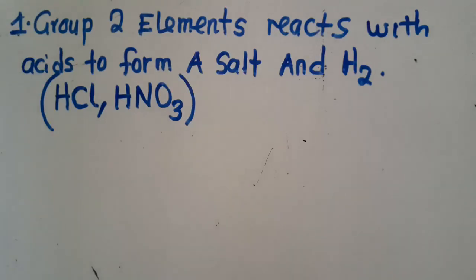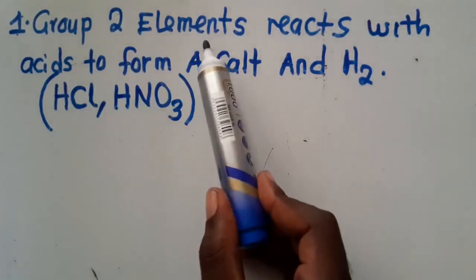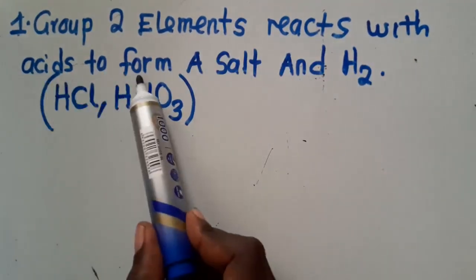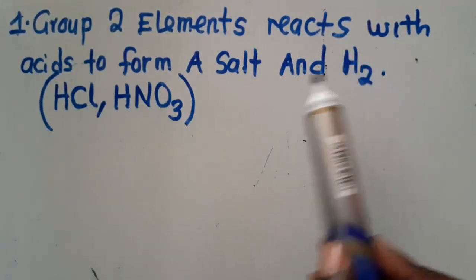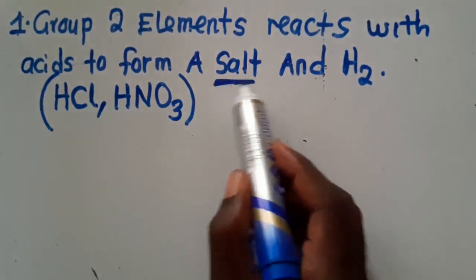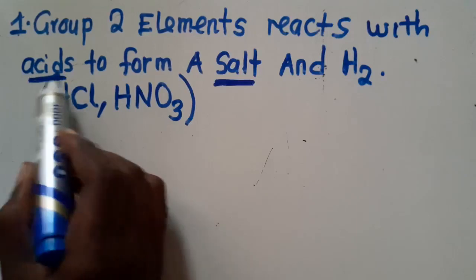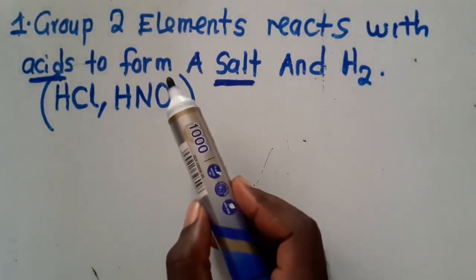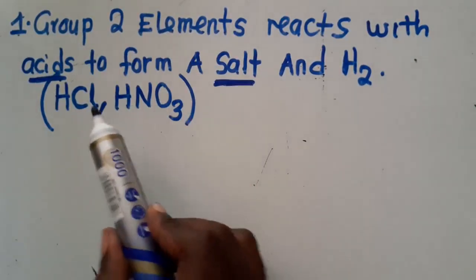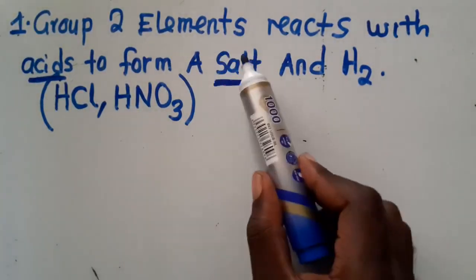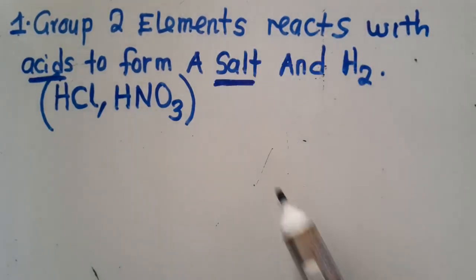Some of you were failing to understand the questions and writing what you are not supposed to. The first question is about a property of group 2 elements: group 2 elements react with acids to form a salt and hydrogen gas. So we've got the term 'salt' here — you are given a salt and an acid, and these are the products that are going to be formed.